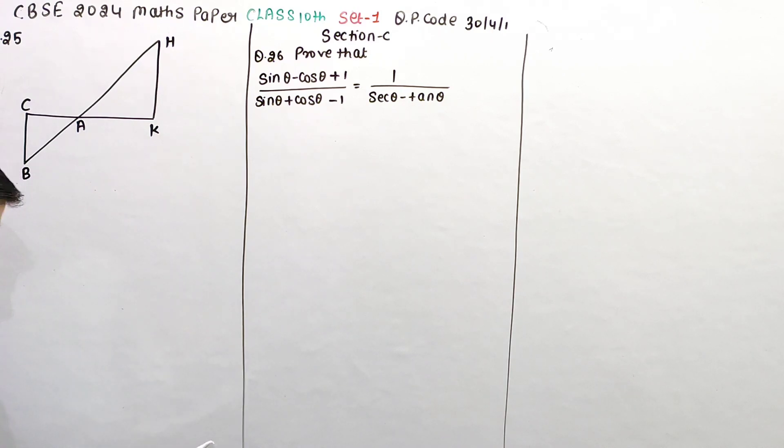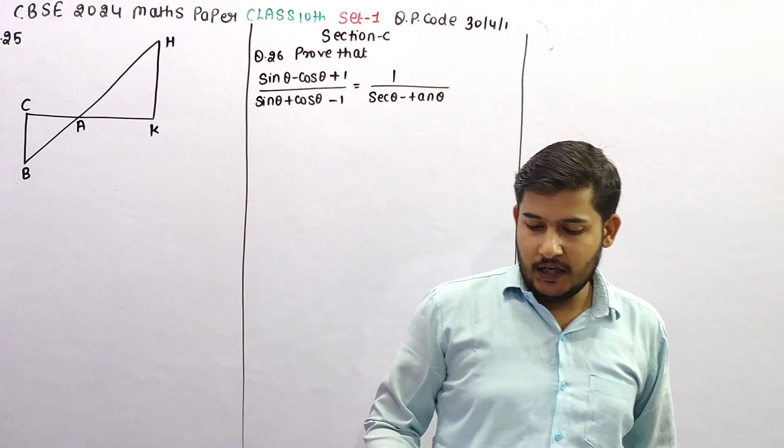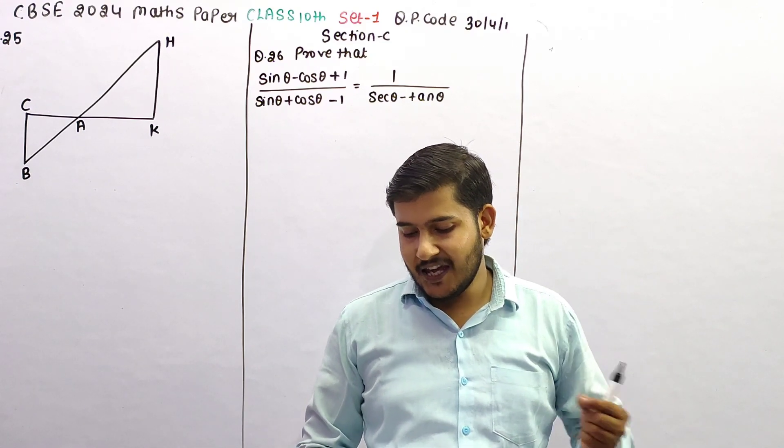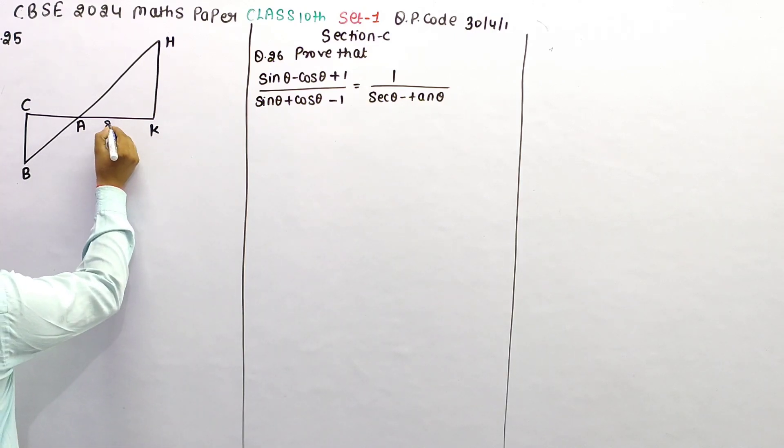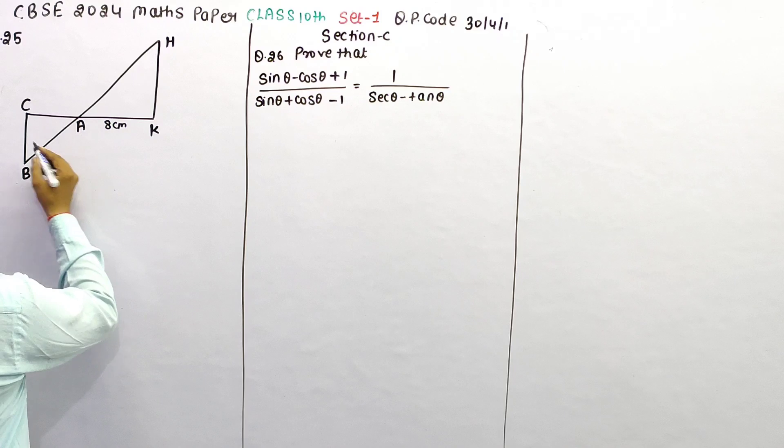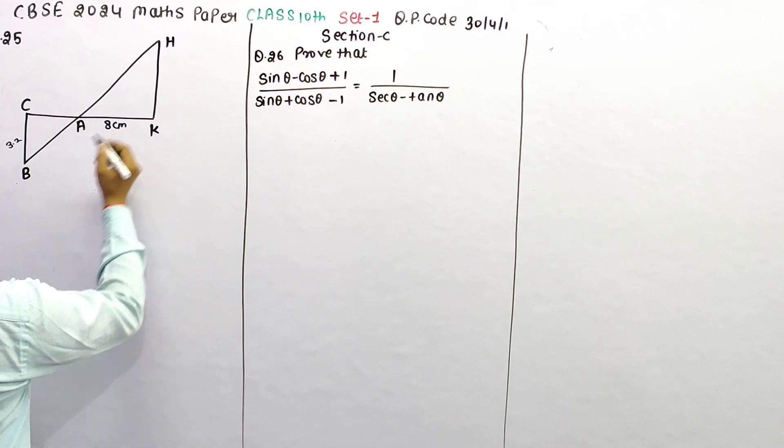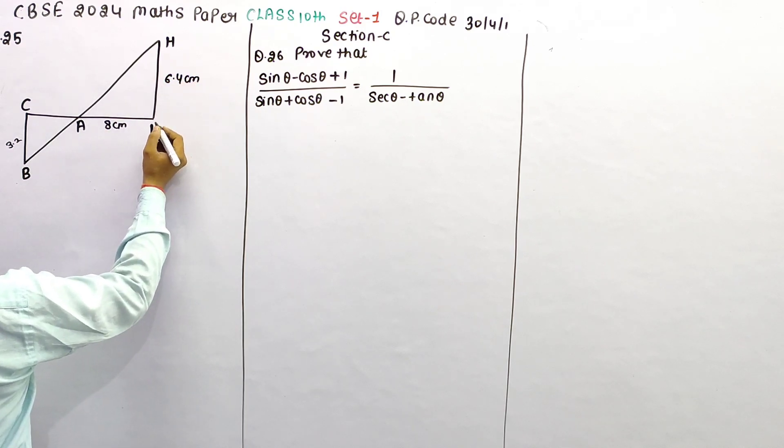Question 25. In the given figure, triangle AHK is similar to triangle ABC. If AK is 8 cm, BC is 3.2 cm, and HK is 6.4 cm, then find AC.